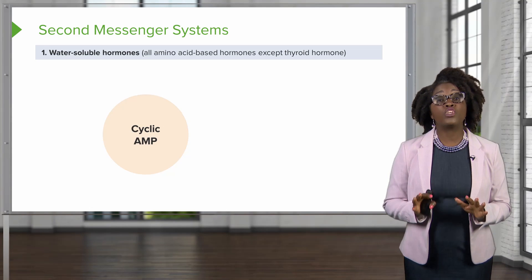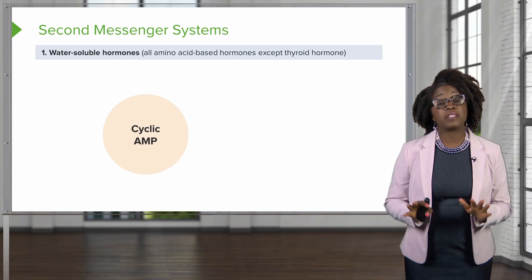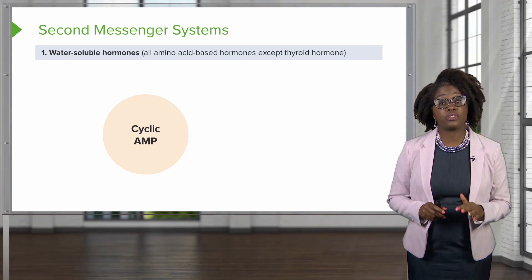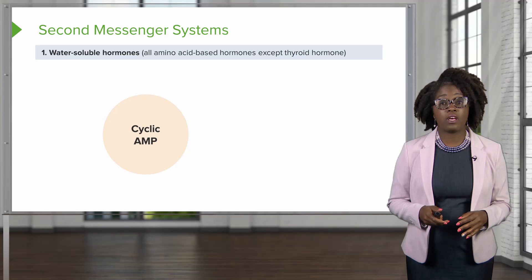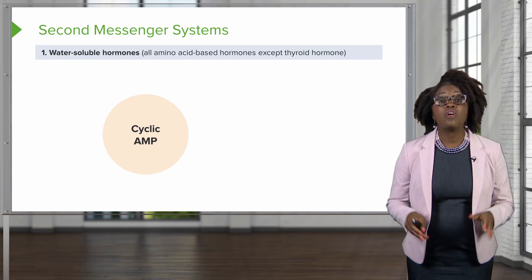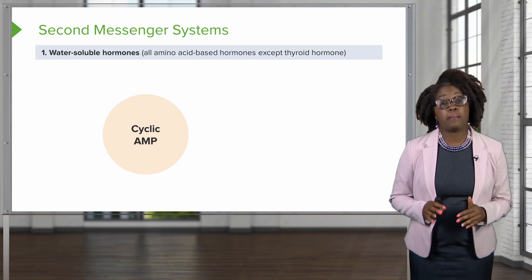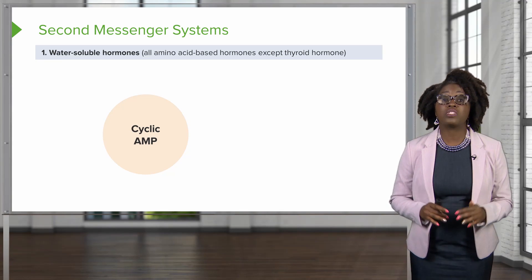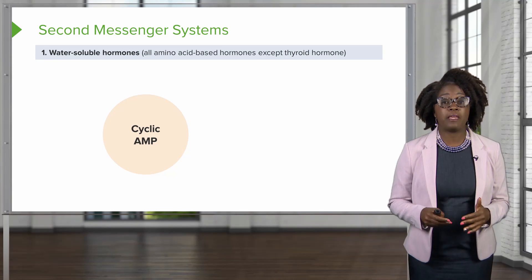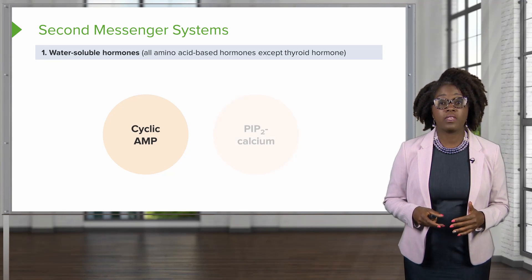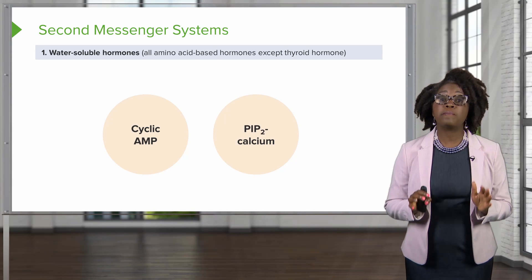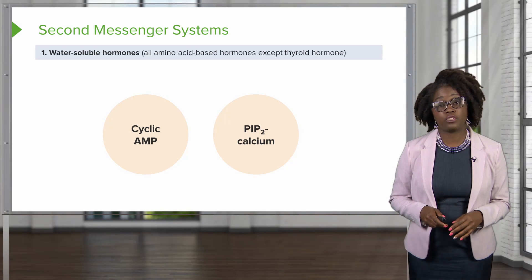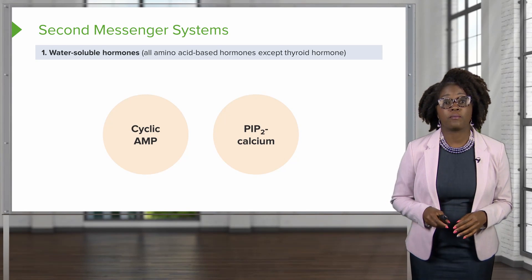There are two main types of second messenger systems that we find in our cells. The first second messenger is cyclic AMP. The second is the PIP2 calcium second messenger system.